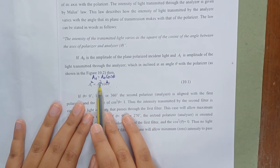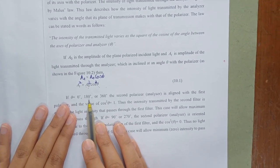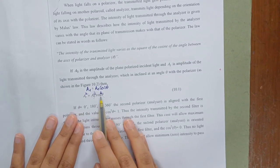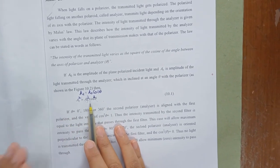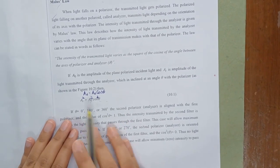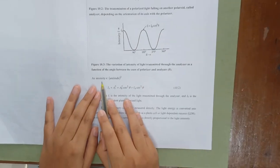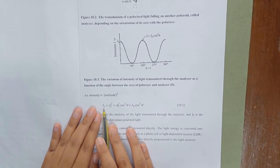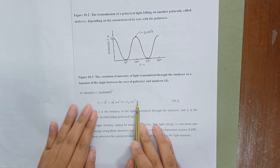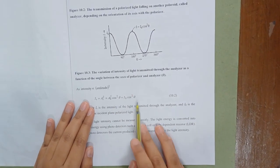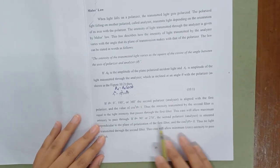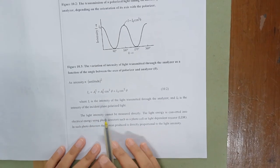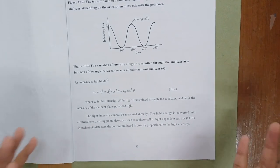Squaring, we get Aₜ² = A₀² cos² θ. When theta equals 0°, 180°, or 360°, cos² θ equals 1, so Aₜ² = A₀², meaning the amplitude of the transmitted light equals that of the incident light. Since intensity is directly proportional to the square of amplitude, we write I = I₀ cos² θ. When theta equals 90°, cos² θ equals zero, meaning the analyzer is perpendicular to the plane of polarization.